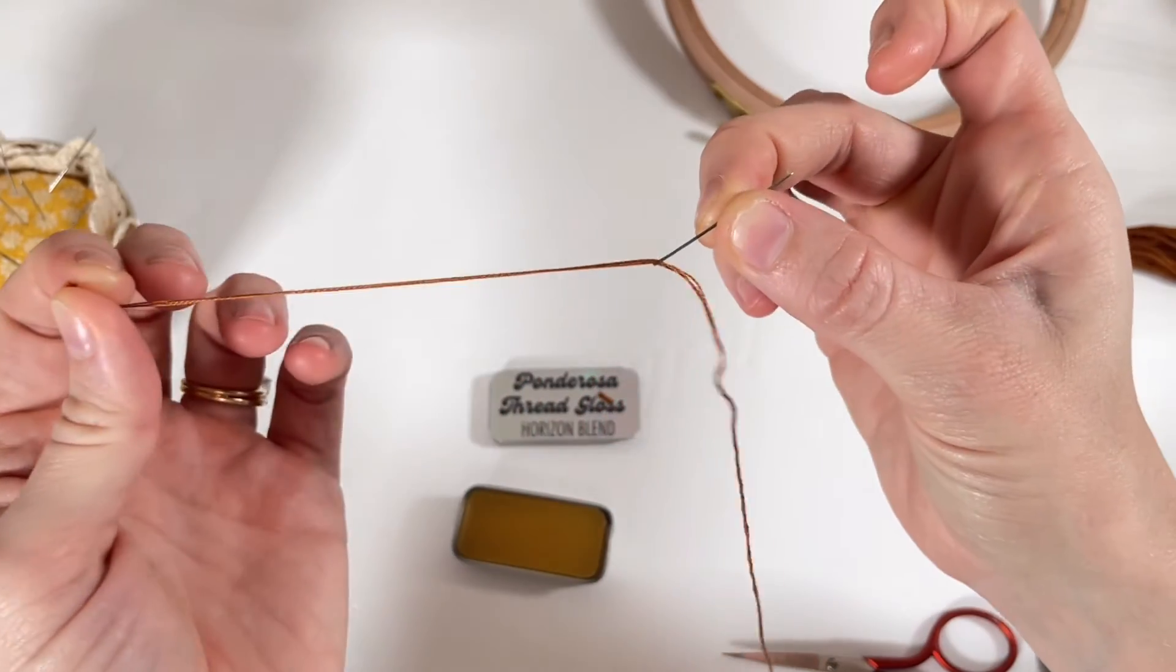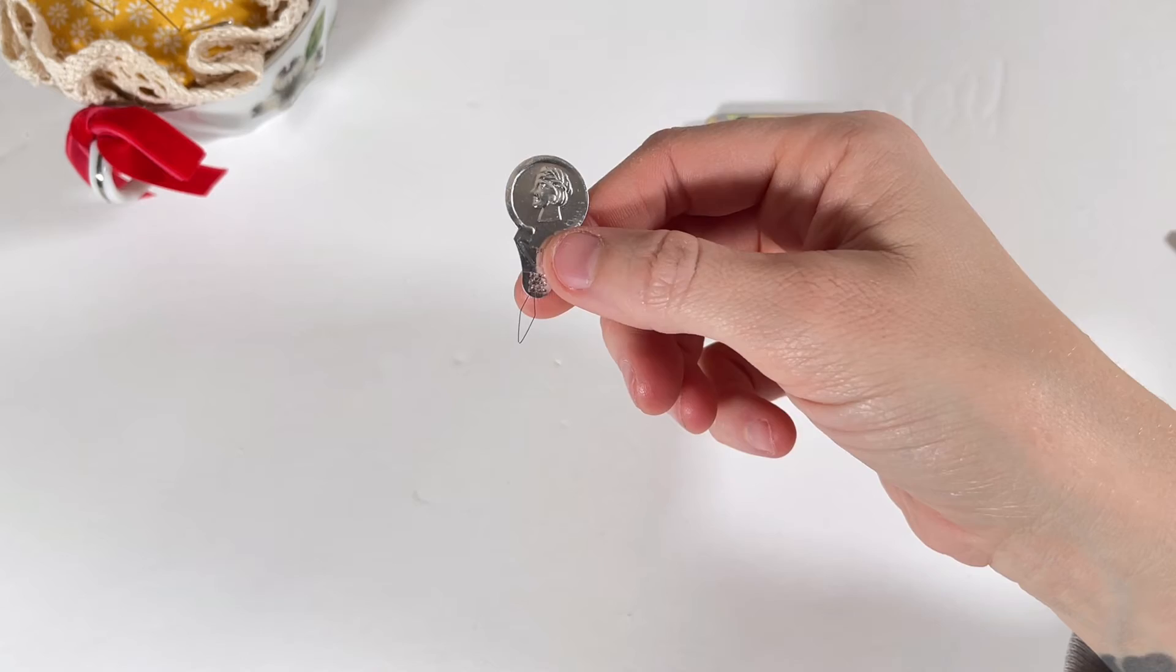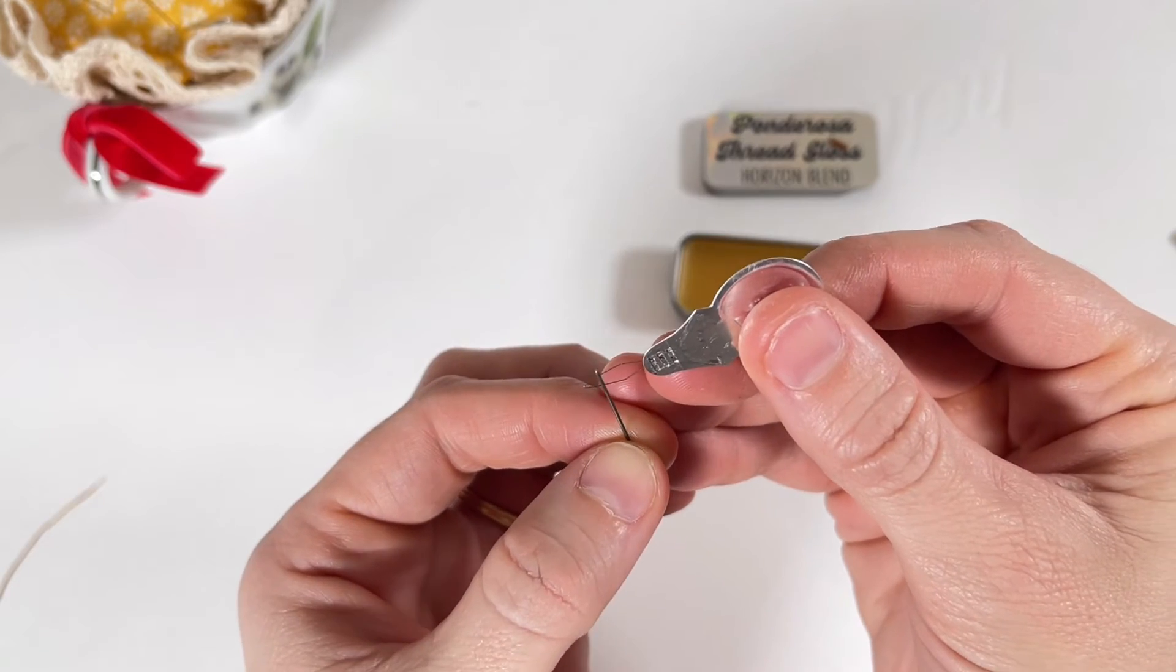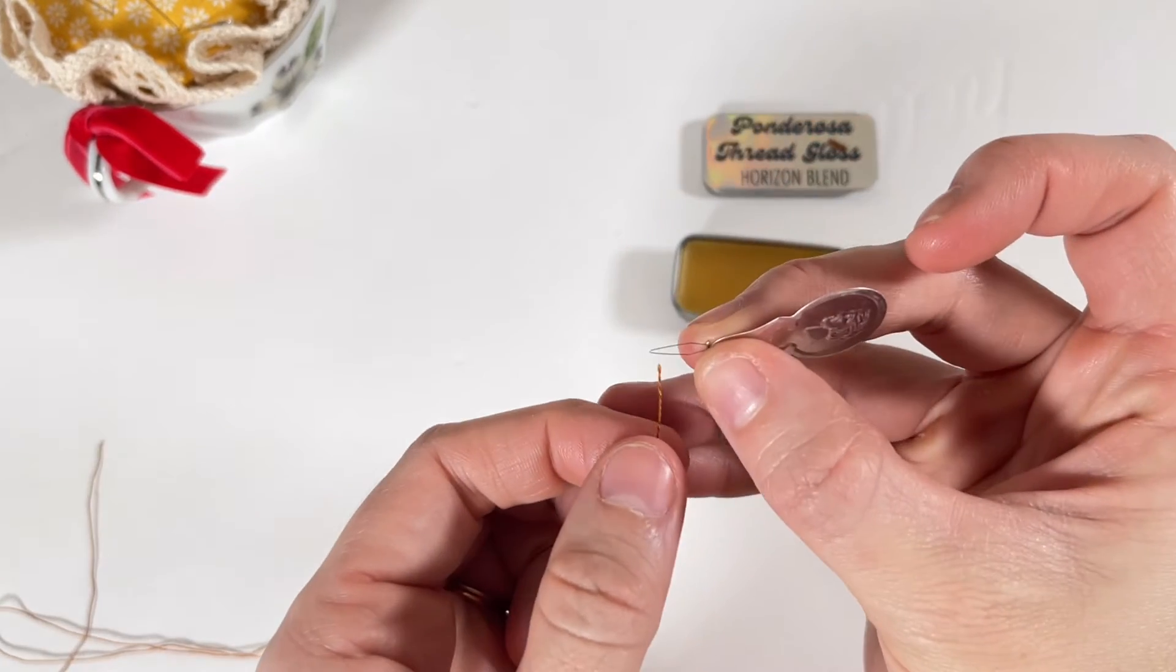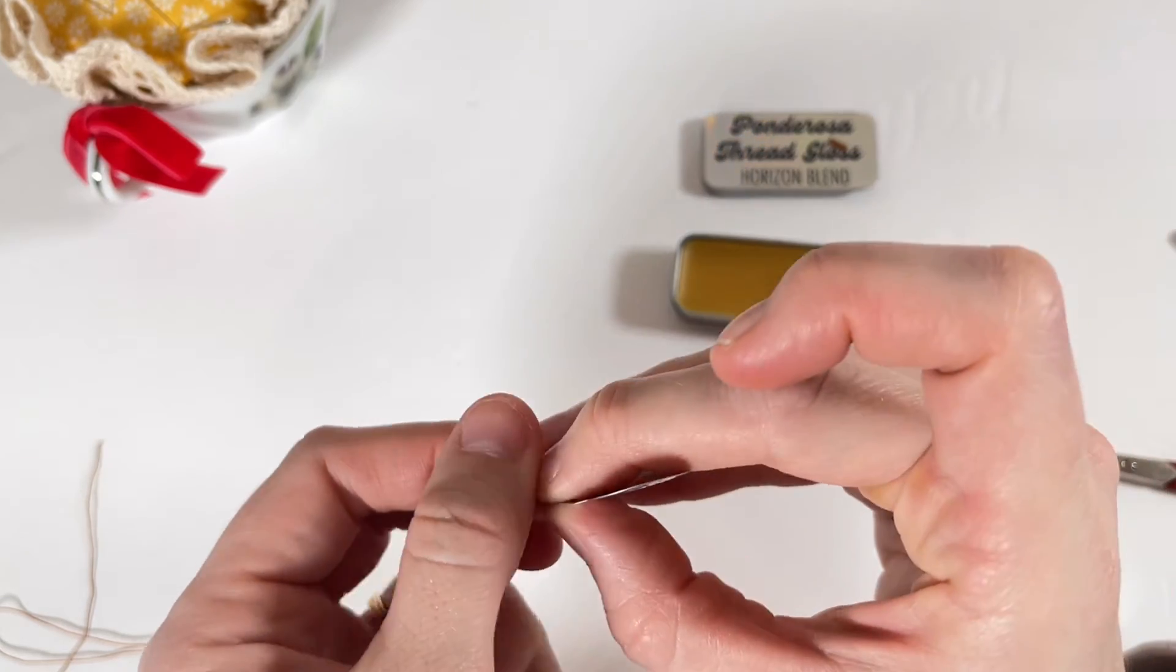If you have a hard time seeing the needle, there's another handy tool called a needle threader you can use. Place the needle threader through the eye of the needle and then take your thread and place it through the needle threader.